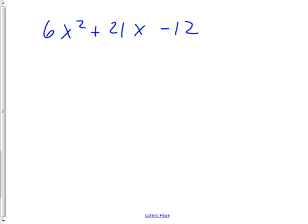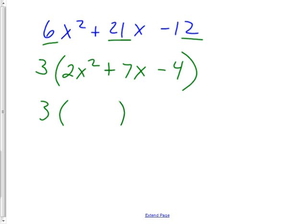And this one has a 3 in common. Everything has a 3 in it. So it's called the GCF. The 3 factors out, I have 2x squared and then plus 7x and then minus 4. And then I go to factor it again. And this must be 2x and x to make 2x squared.